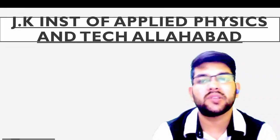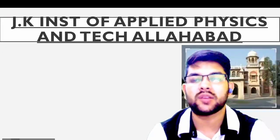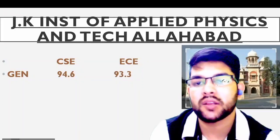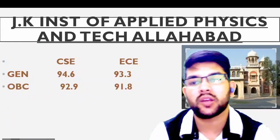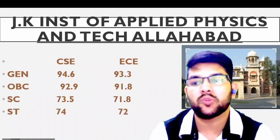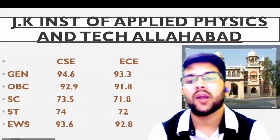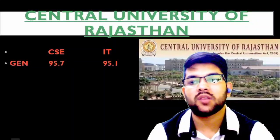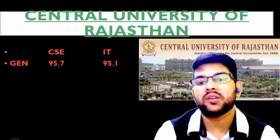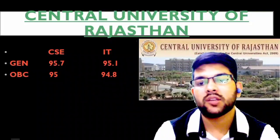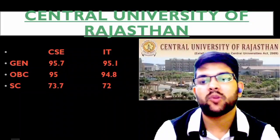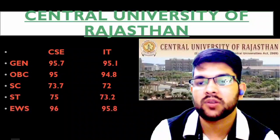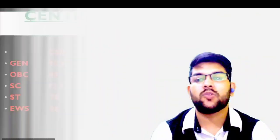Next is JK Institute of Applied Physics and Technology, Ahmedabad. Here is the information. For general: 94.6 and 93.3. For OBC: 92.9 and 91.8. For SC: 73.5 and 71.8. For ST: 74 and 72, and also 75 and 73. For EWS: 96.5.